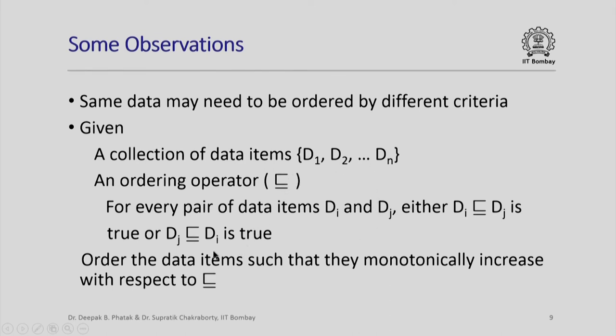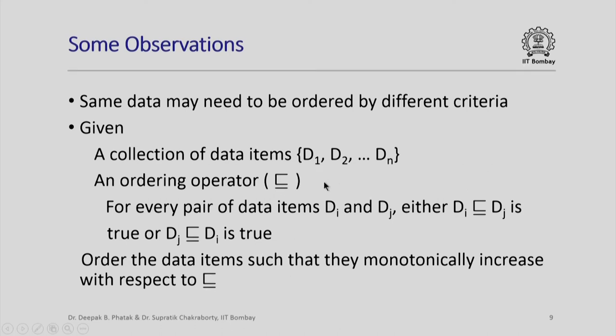Given the data items and given this ordering operator, our problem is to order the data items such that once sorted they monotonically increase with respect to this ordering operator. Note that this ordering operator is not necessarily the less-than-or-equal-to operator we usually know — it could be much more complex. For example, to order data items in decreasing fashion, one could define the ordering operator to be greater than or equal to. This is what is called the sorting problem in computer science.